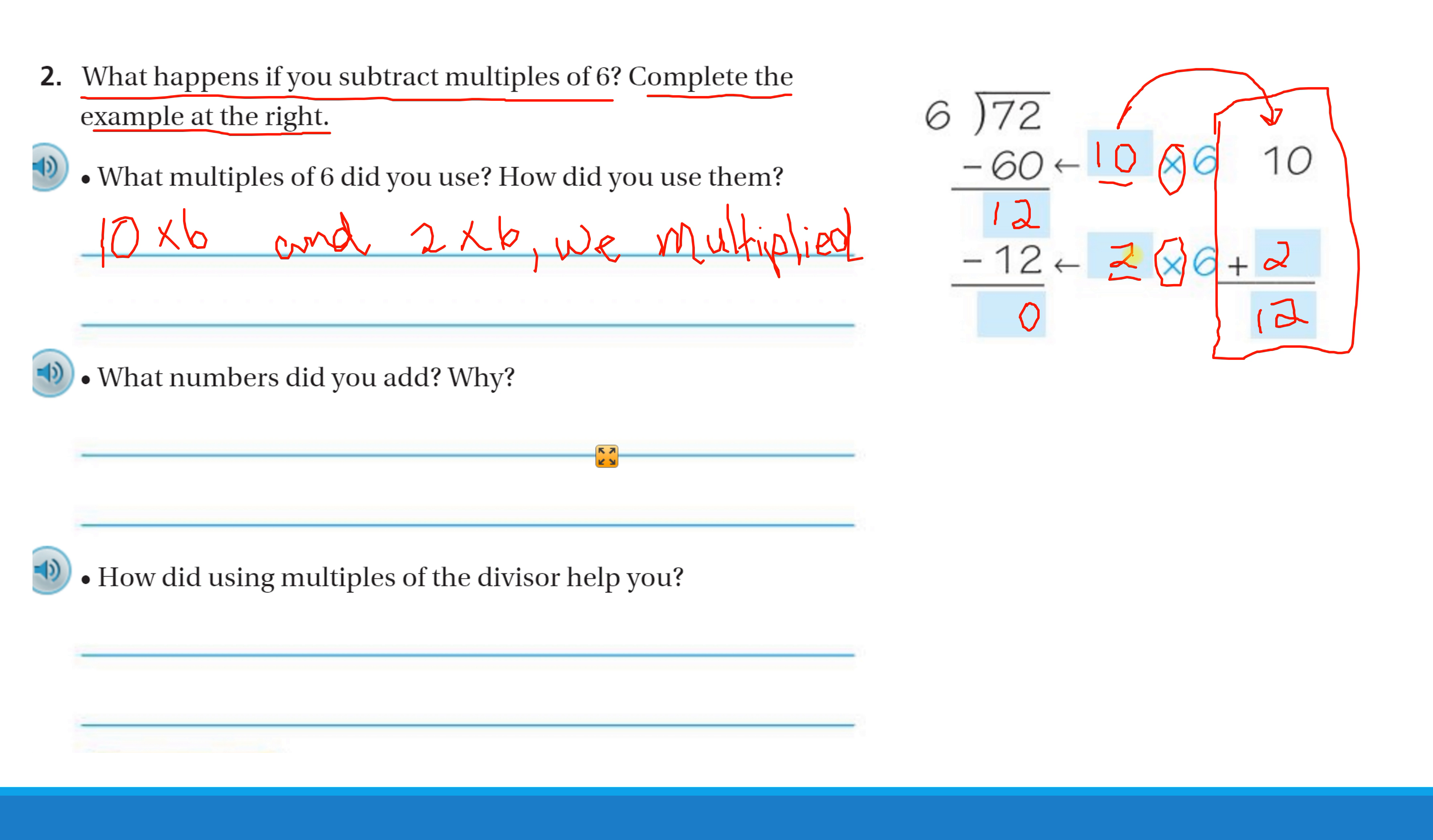So we used 10 multiples of 6, 2 multiples of 6. Then we multiplied, and we subtracted, and here's where we did our subtraction. So we subtracted the 10 multiples of 6, which was 60 first, then we subtracted the 2 multiples of 6, which is 12,